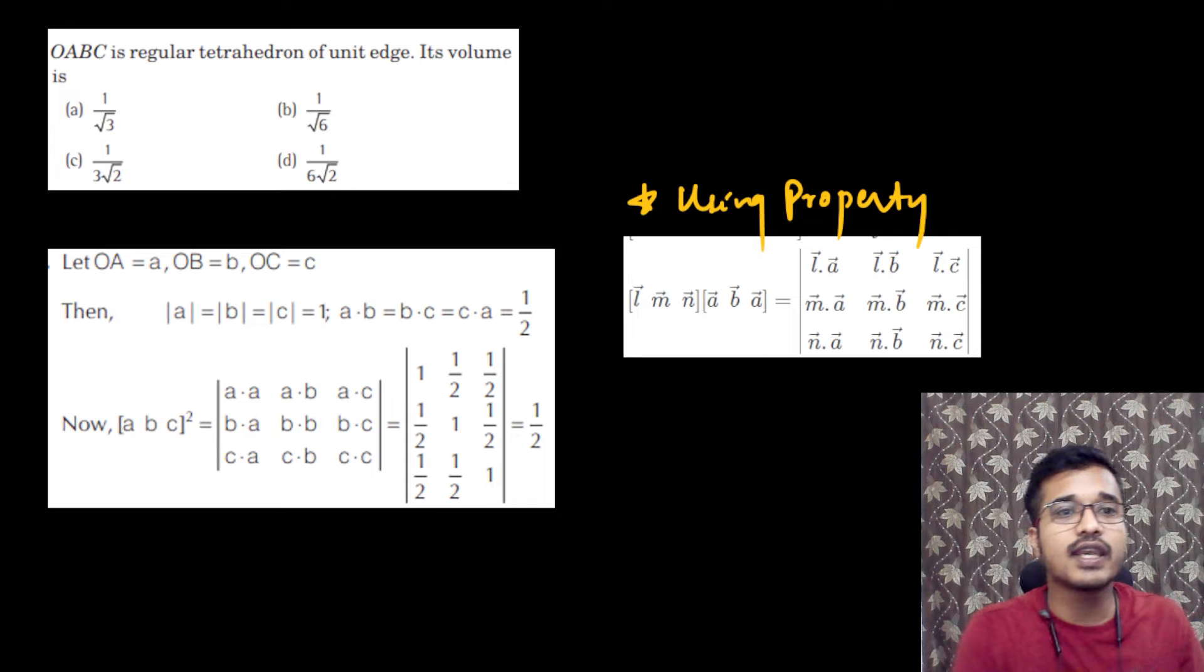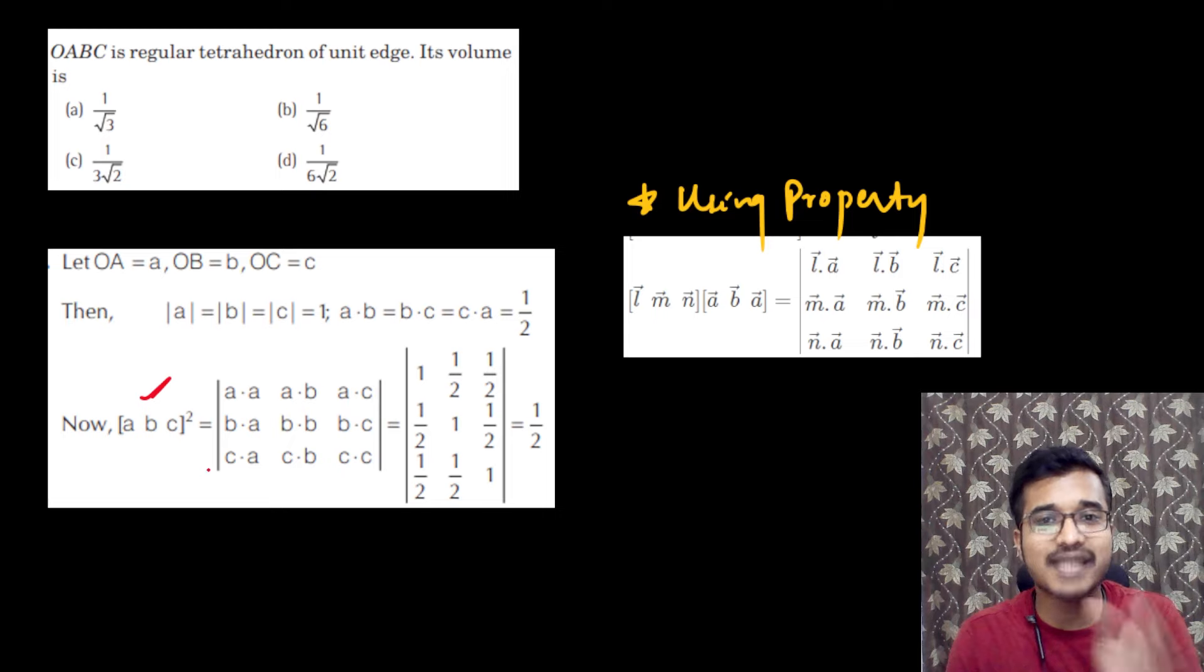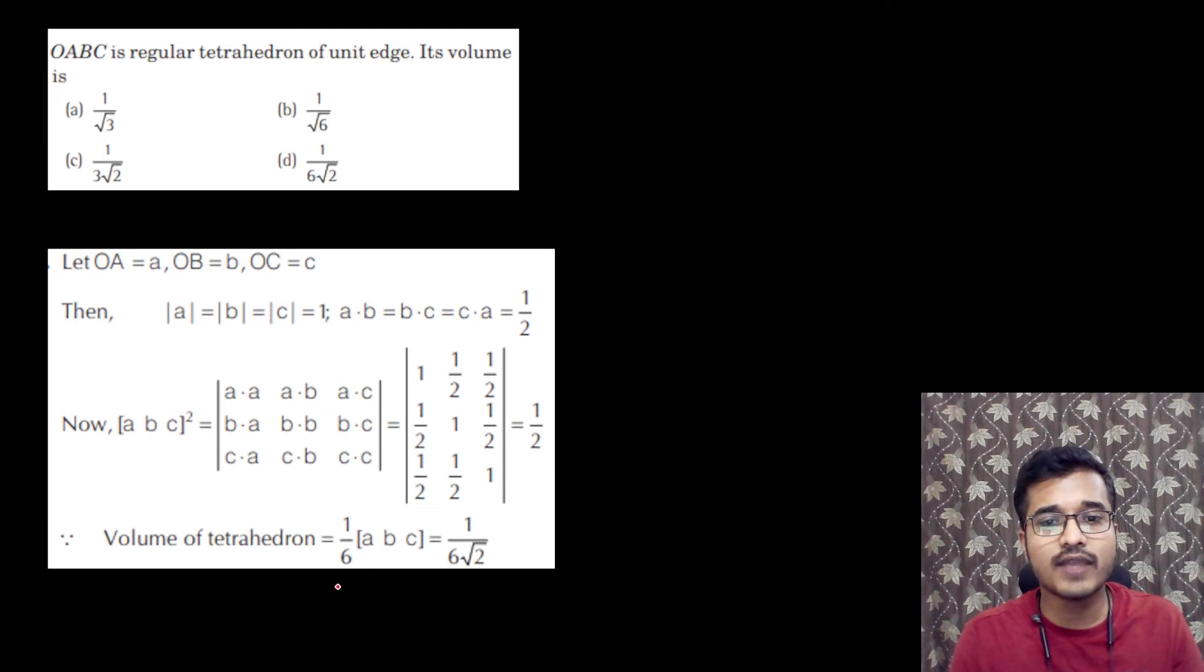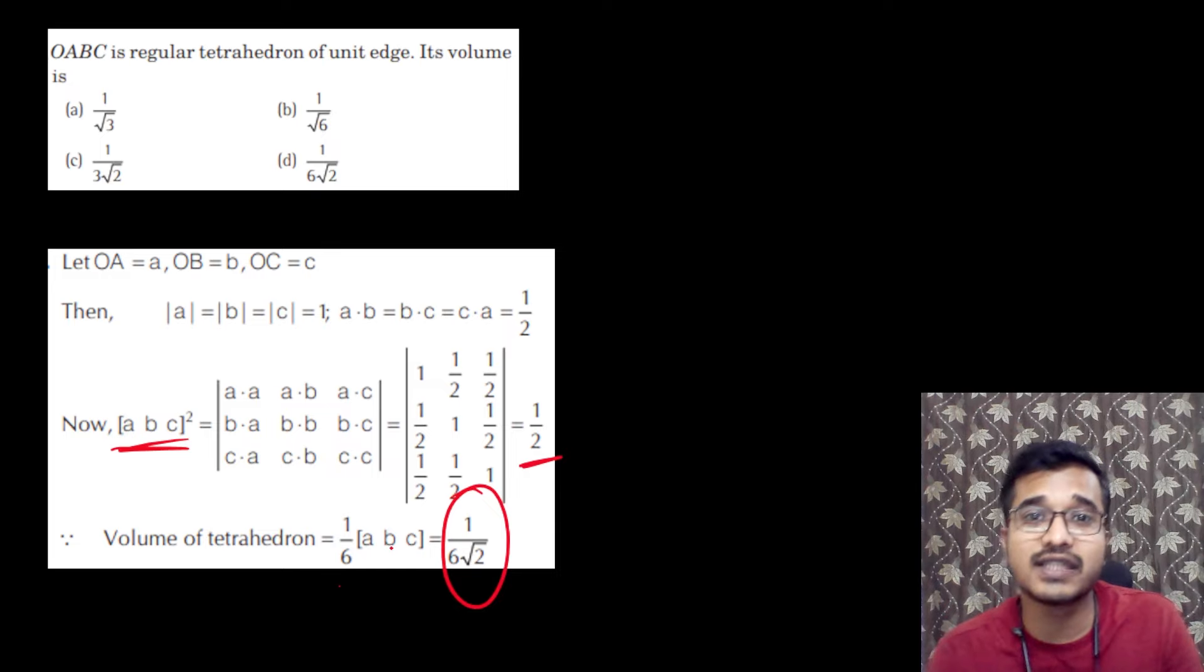Now, in the next step, what will we do? We have this is your box product, or then we have a scalar triple product here. It will simply square you. So this property will have to use you. Scalar triple product here. And finally, you can remove the determinant here. Then, you will simply remove 1 by 6, which is your scalar triple product. It will be equal to your square value. So it will simply take root. So 1 by 6 root 2, we will get the answer.